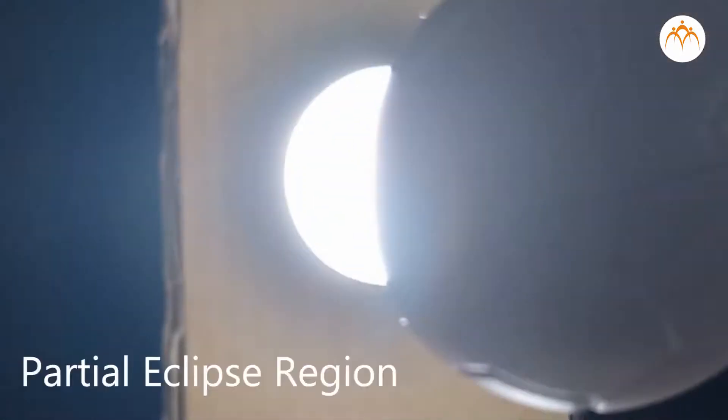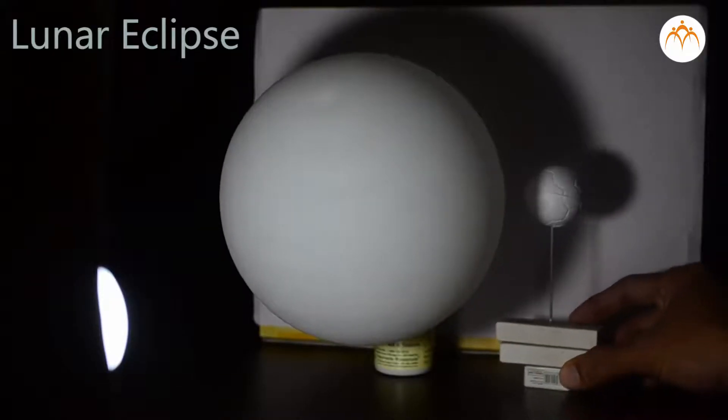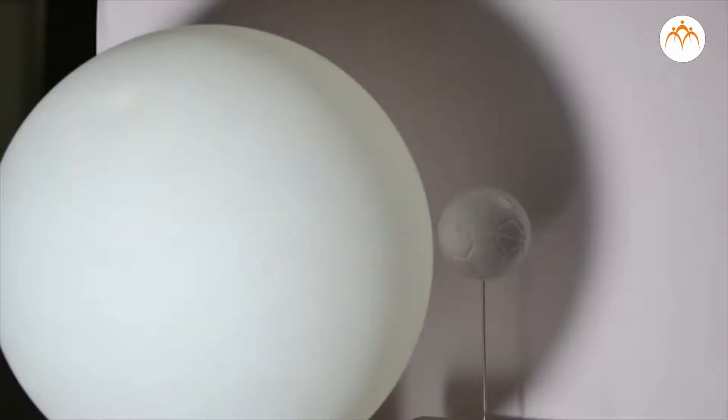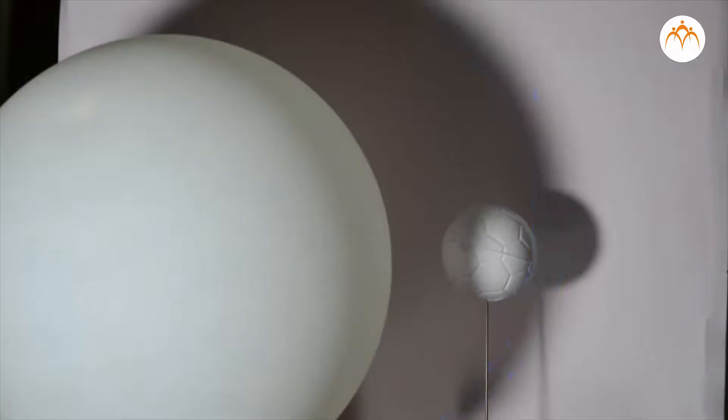Now let us place the moon on the other side of the Earth. We will place a screen behind Earth so that we can identify the umbra and penumbra region. When the moon is in the umbra region, there is total lunar eclipse. When the moon is in the penumbra region, there is a partial lunar eclipse.